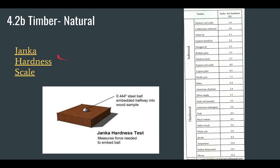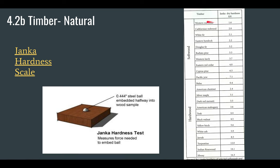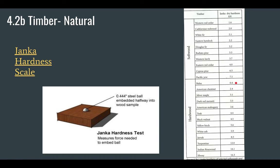One way we measure hardness is with the Janka hardness test. You push a steel ball into a wood sample, measuring how much force — in kilonewtons — is needed to push it halfway in. In general, softwoods take fewer kilonewtons than hardwoods. Pacific Yew has a higher Janka hardness than most of the hardwoods shown here, whereas balsa wood has a very low hardness. But remember, the softwood/hardwood distinction has more to do with structure than with actual hardness.